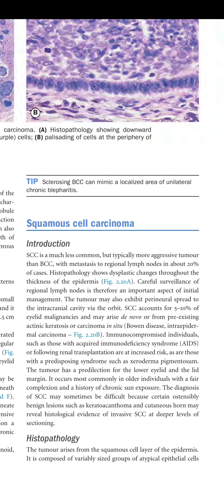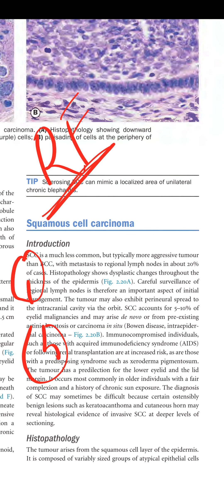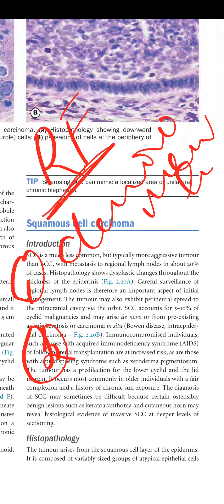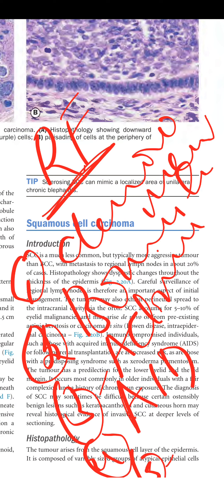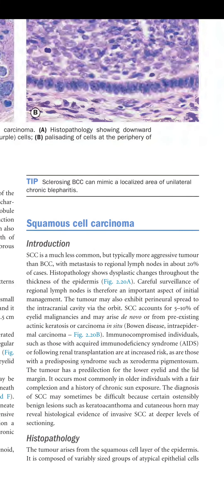Immunocompromised individuals — such as those with AIDS or following renal transplantation — are at increased risk, as are those with predisposing syndromes such as xeroderma pigmentosa. SCC can arise de novo, from Bowen disease, actinic keratosis, following AIDS, renal transplantation, chronic sun exposure, or xeroderma pigmentosa. Diagnosis may sometimes be difficult because ostensibly benign lesions such as keratoacanthoma and cutaneous horn may reveal histological evidence of invasive SCC at a deeper level of sectioning.